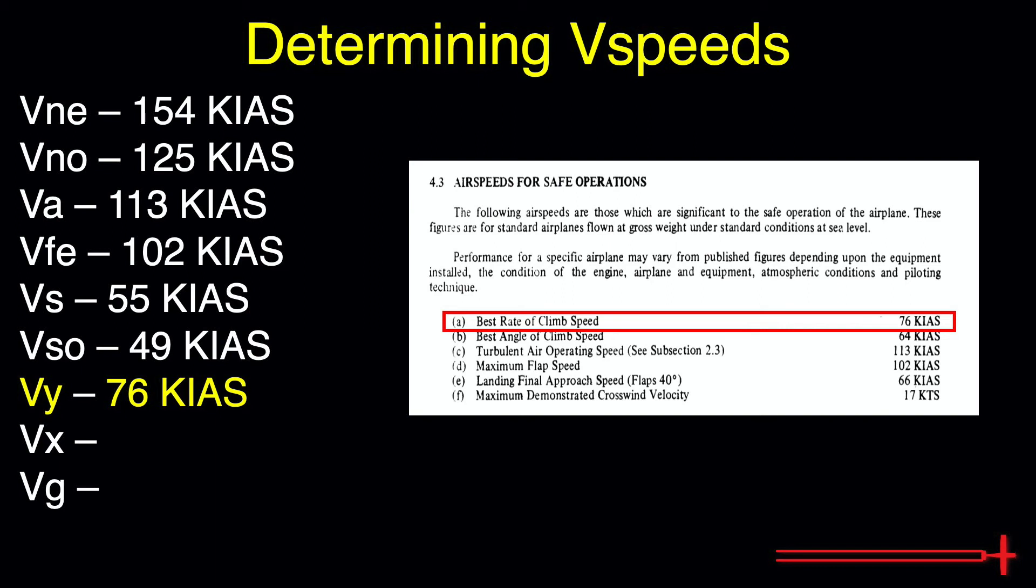The best rate of climb speed is the speed that will give us the greatest increase in altitude per unit time. Underneath this, we can find our VX or best angle of climb of 64 knots. This speed would give us the greatest increase in altitude per unit distance traveled.